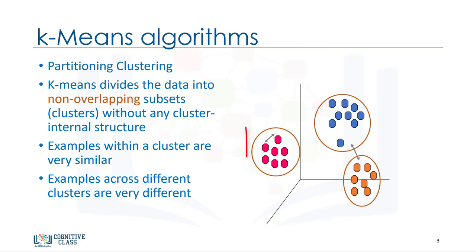As you can see, for using k-means, we have to find similar samples, for example, similar customers. Now we face a couple of key questions. First, how can we find the similarity of samples in clustering? And then, how do we measure how similar two customers are with regard to their demographics?